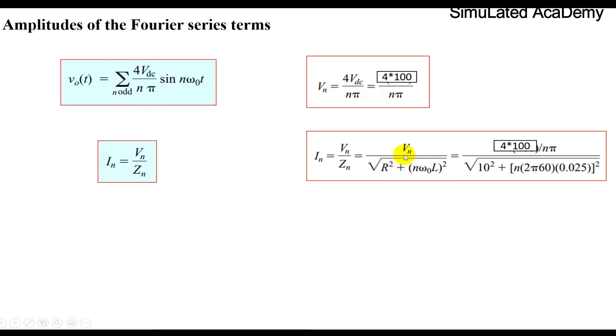Just put its values. Vn is equal to 4 multiplied by 100 divided by n pi. In the denominator we have R is equal to 10 and omega 0 is equal to 2 pi f and f is 60 Hz while the inductive value is 25 mH. In is equal to 4 multiplied by 100 divided by n pi whole divided by 10 square plus n into 2 pi f, f is 60 into 0.025 square and we will take the square root of the denominator.